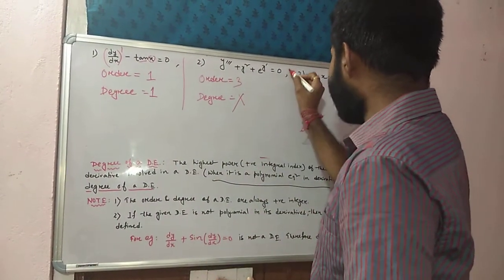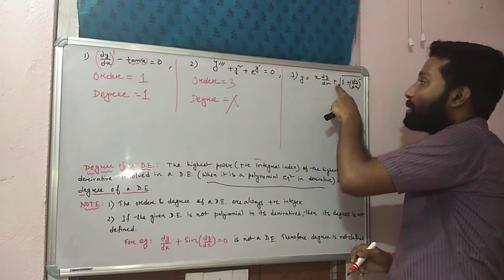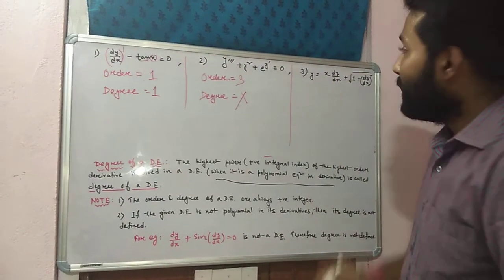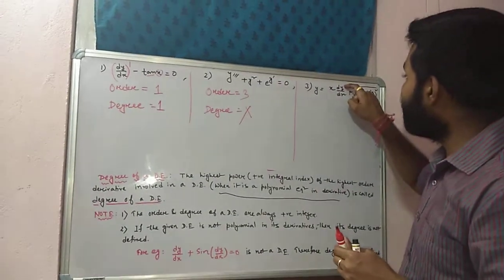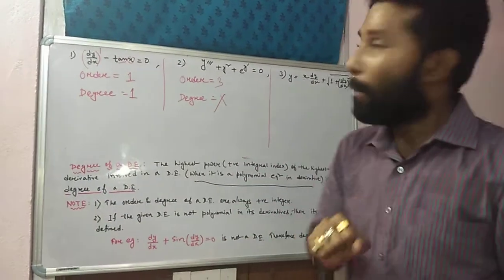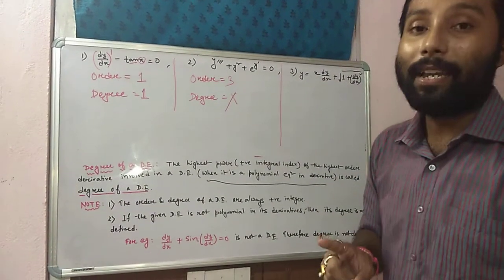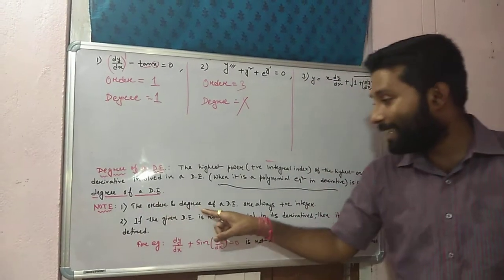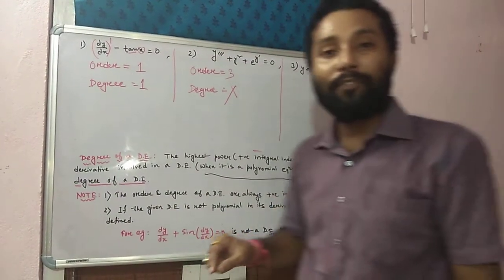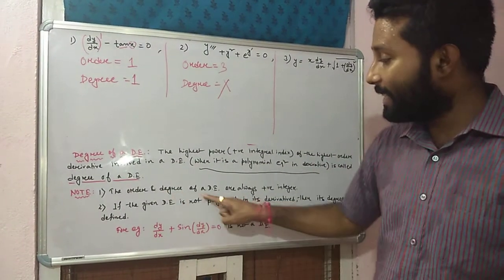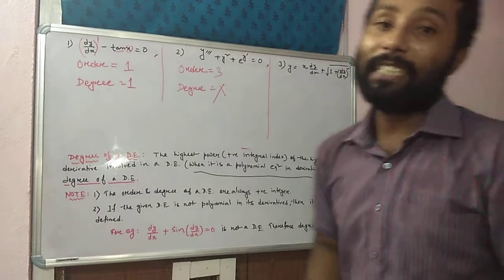Take the last important example: y = x·(dy/dx) + √(1 + (dy/dx)²). It is a differential equation because it involves dy/dx. But can you find the order as well as degree from this differential equation directly? No. Why? Because the order and degree of a differential equation are always positive integers. Yaha pe root over ka matlab power half hai. Half is not an integer. So from this differential equation, we cannot determine order and degree directly.